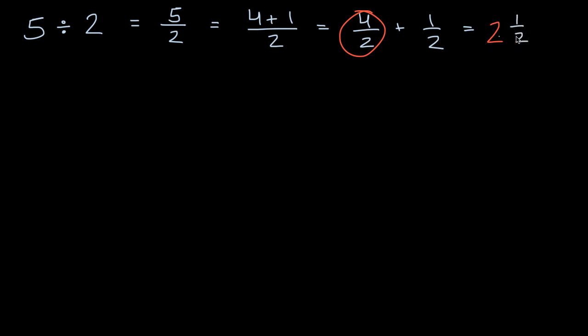And if we were to express that as a decimal, that's going to be equal to two and... how many tenths equal a half? Well, five tenths is equal to a half. So five divided by two is 2.5.